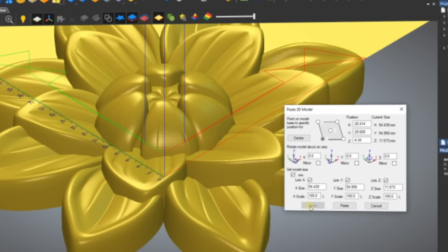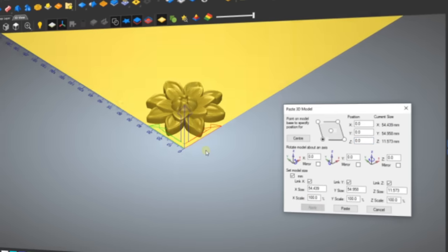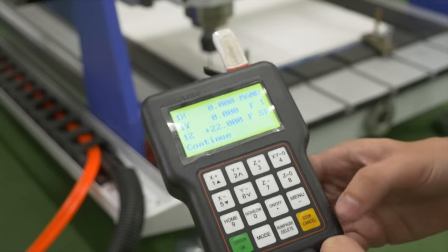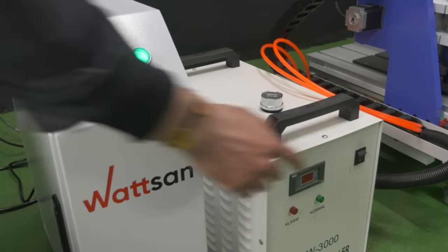Before running the file on the machine, it can be run in test mode in the software to identify and correct any errors. The control program file must then be transferred to the milling machine. Before starting the machine, make sure it is ready.